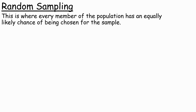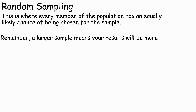Random sampling is a kind of sampling where every member of the population has an equally likely chance of being chosen for the sample. A larger sample does mean that your results will be more reliable because it becomes more representative of the population.